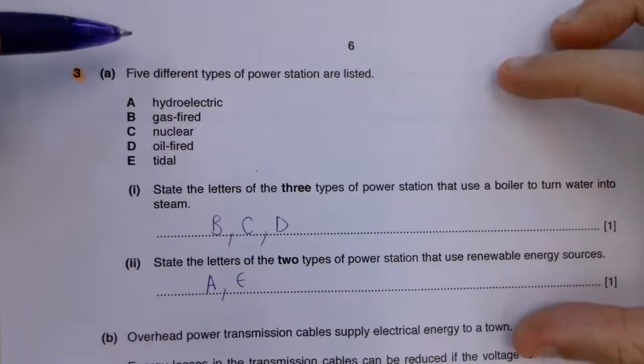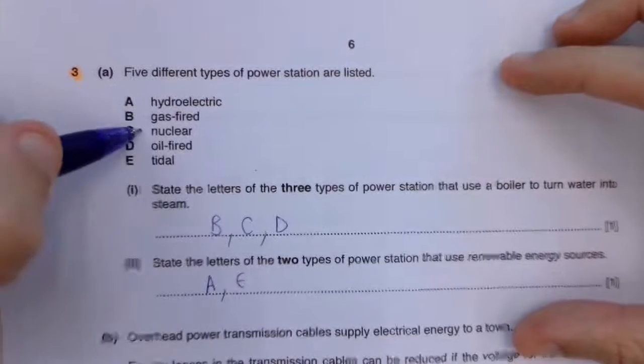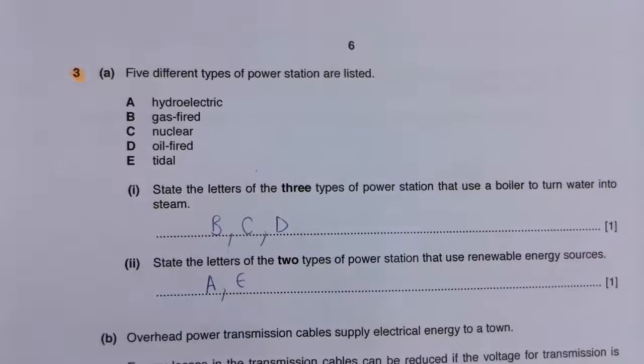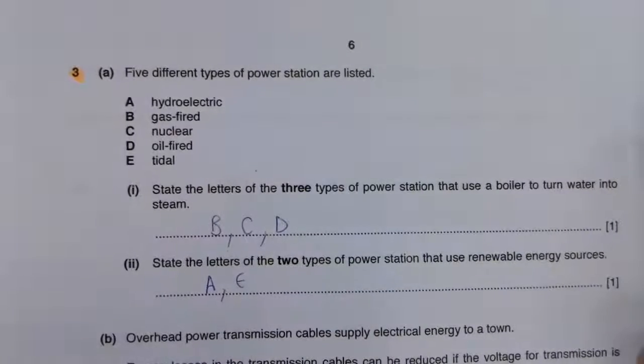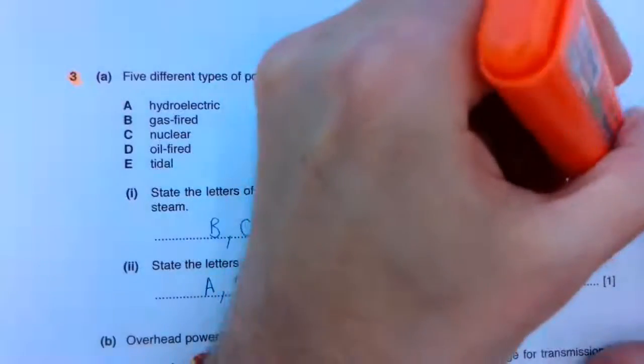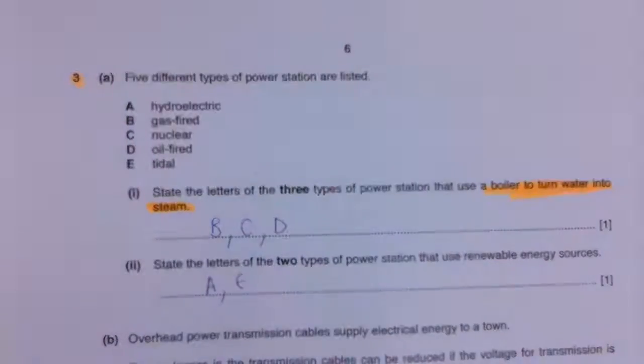We're looking at 5 different types of power station: hydroelectric, gas-fired, nuclear, oil-fired and tidal. The first one asks for 3 letters which show the types of power station which use a boiler to turn water into steam. The point here being, are we burning fuel?